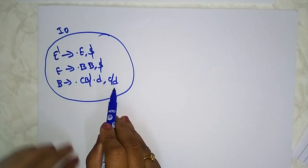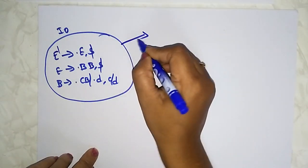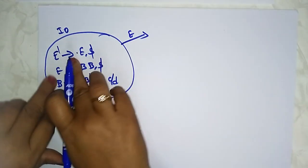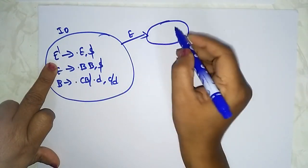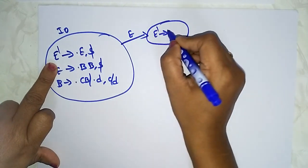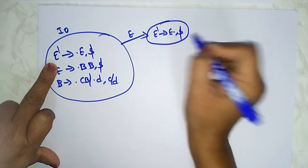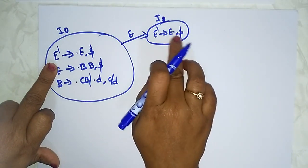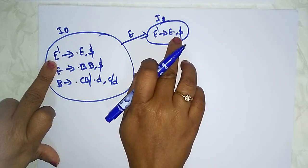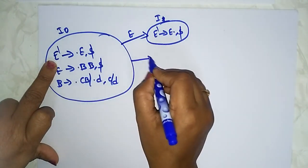I've taken c/d as a lookahead value. Now on 'e', the first production gives us: E → E · , with dollar as lookahead — this is I1. After the dot, no non-terminals are present, so just leave it. Now let's take the B production.